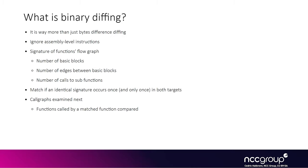Binary diffing ignores byte-level and assembly-level differences. Instead, it works on actual function flow graphs, looking at the basic blocks of a function. Basic blocks are visible in disassembler applications like IDA or Ghidra — they are a series of instructions where, if you execute the first instruction of the block, you necessarily execute all instructions until the last one. An instruction at the end of a block typically jumps to the first instruction of another basic block.